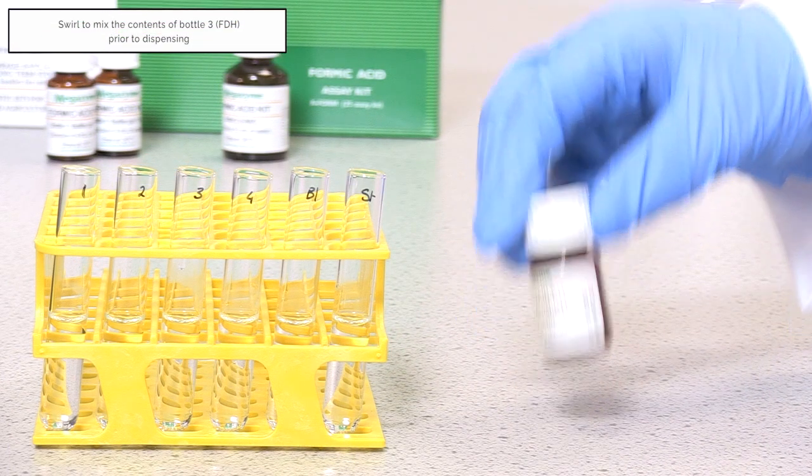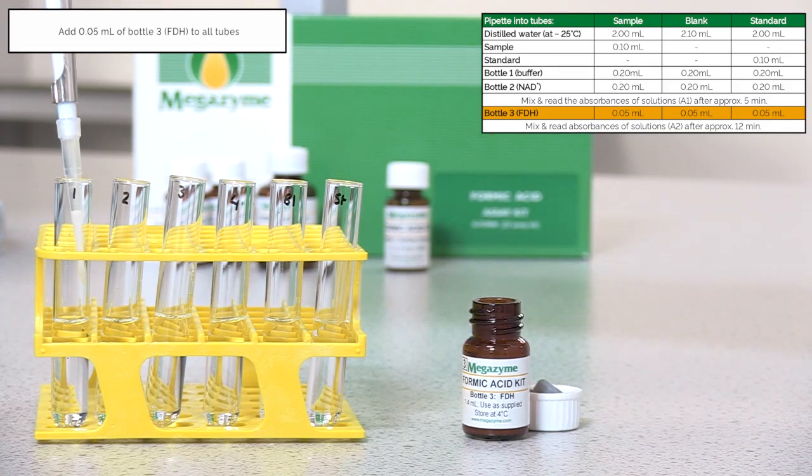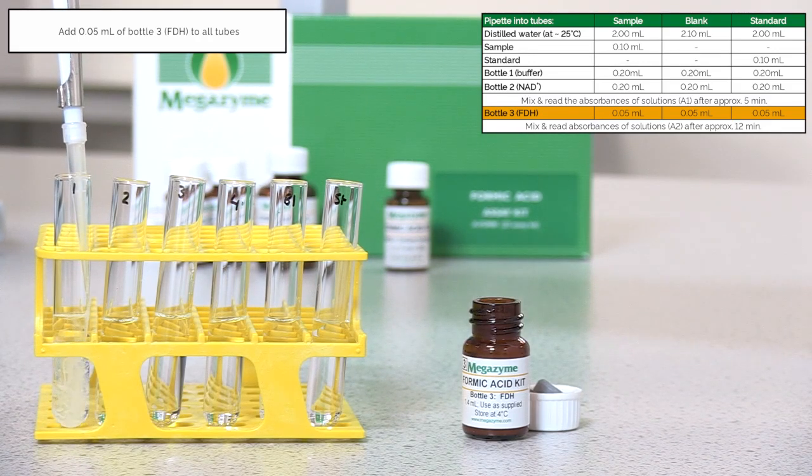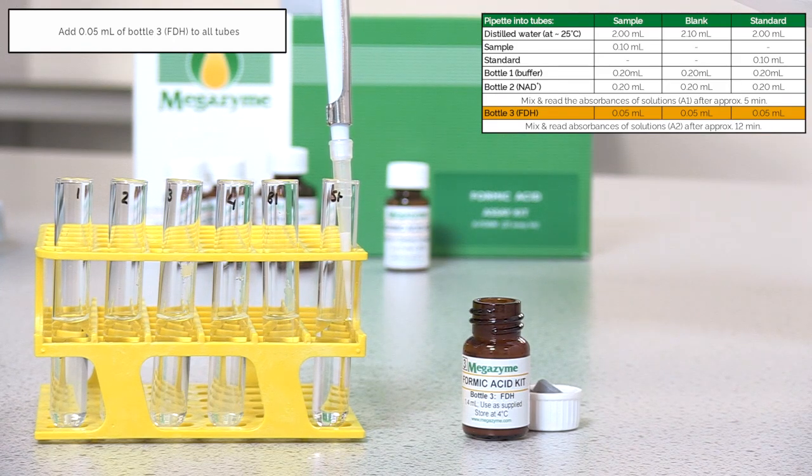Swirl to mix the contents of Bottle 3 formate dehydrogenase prior to dispensing. After recording the A1 absorbance value, pipette 0.05 ml of Bottle 3 into all assay tubes.